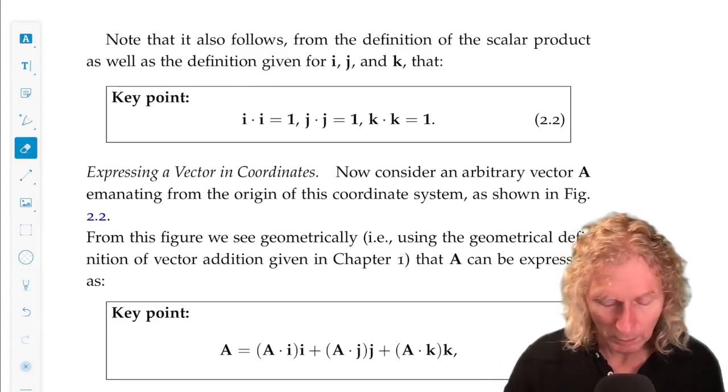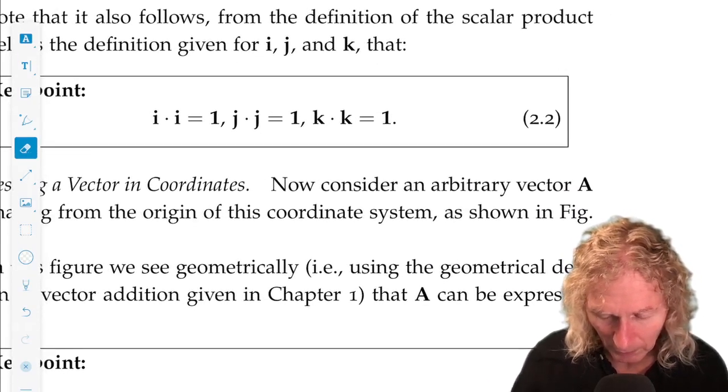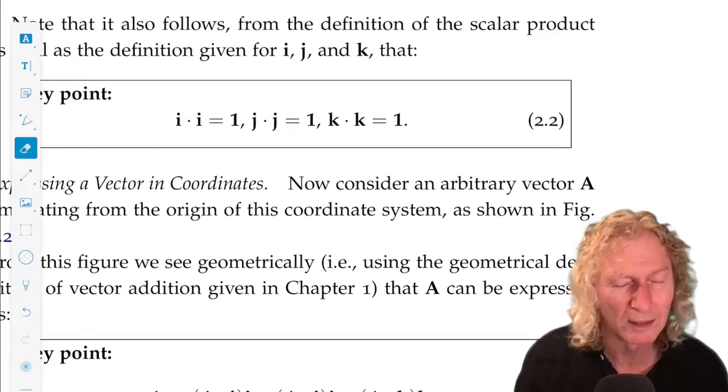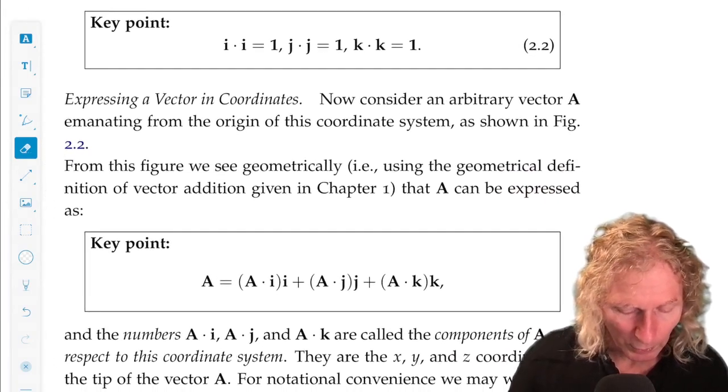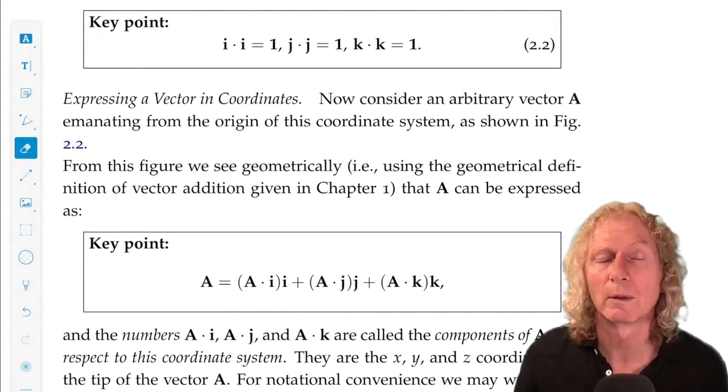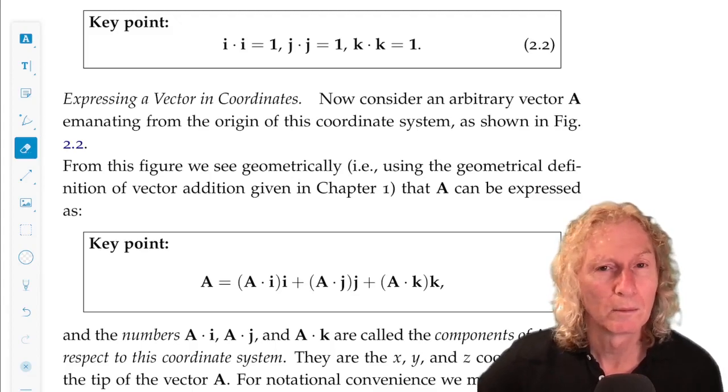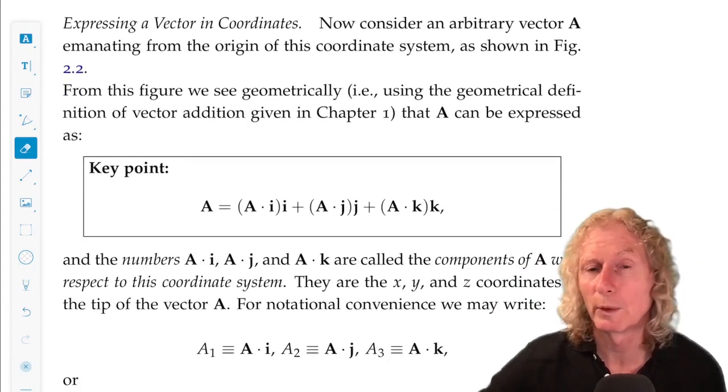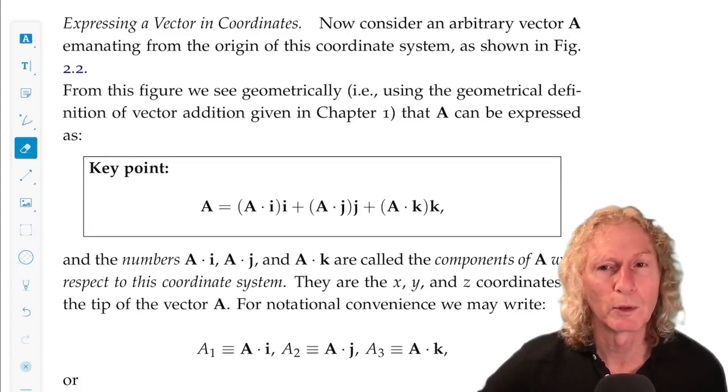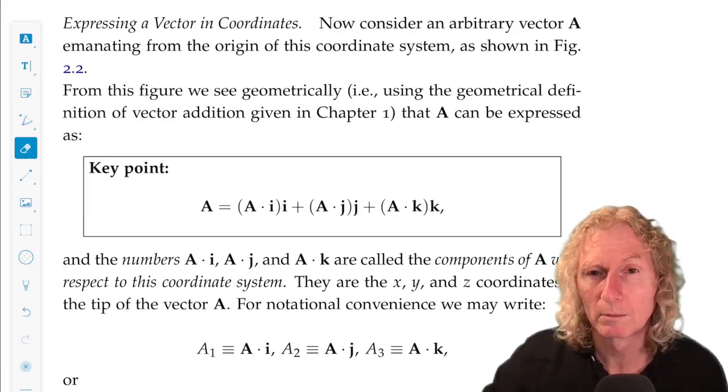You need to use the definition of dot product to verify that this is indeed the case with 2.2, but that's a fairly easy verification. So the next thing we want to do is express or represent a vector in these coordinates. Let's take a vector a.